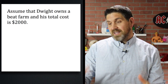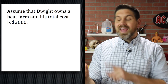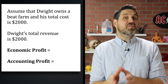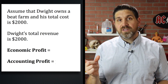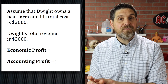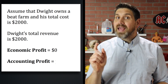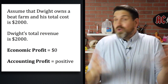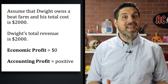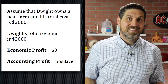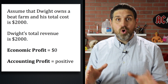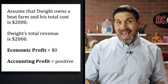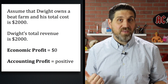So if you see a question that says the total cost is $2,000, inside there is both explicit and implicit costs. Which means if the total revenue is also $2,000, then the total economic profit would be zero, but the accounting profit would be positive. You don't need to calculate the accounting profit amount, because you're not in an accounting class — you're in economics.